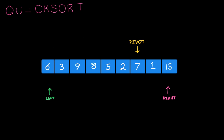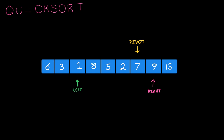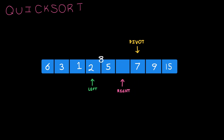Then we move the left pointer until we find an element that should be on the other side, and we do the same thing for the right. Now 9 and 1 — those should be swapped as well. Take 1 over here, 9 over there. Again, move the left pointer until we have an element that should be swapped, move the right pointer. Now 2 and 8 — those should be swapped.